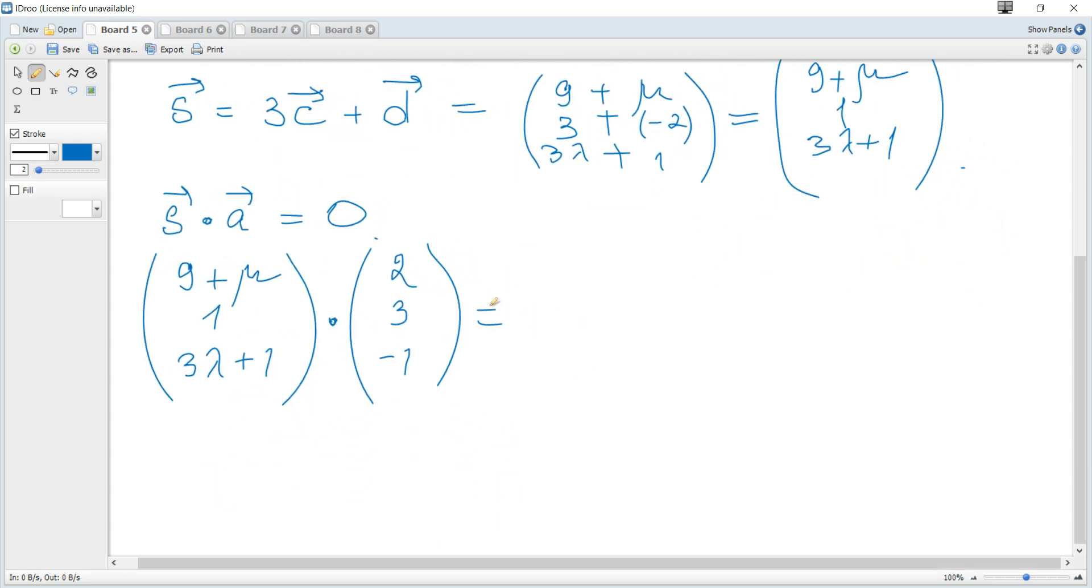And what is dot product? Again, x by x, plus y times y, plus z times z. So it becomes 2 times 9 plus mu plus 3, negative 1 times, so it's minus 3 lambda plus 1, and it should be 0.